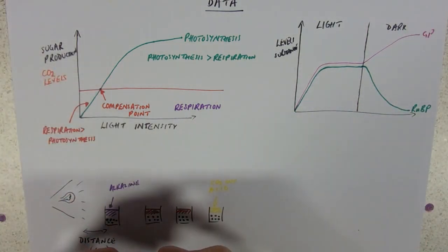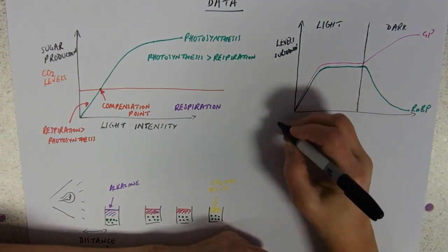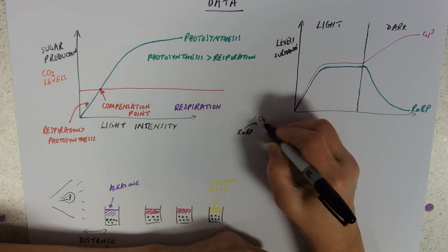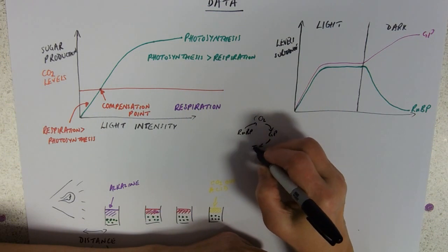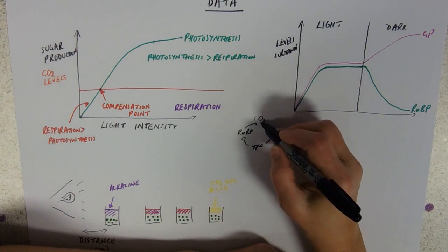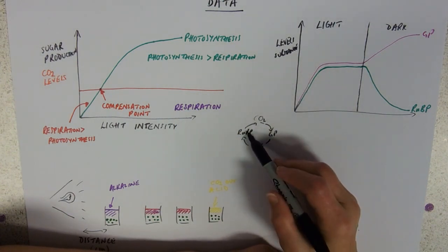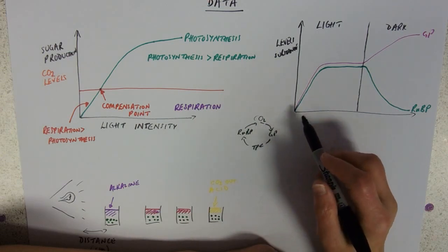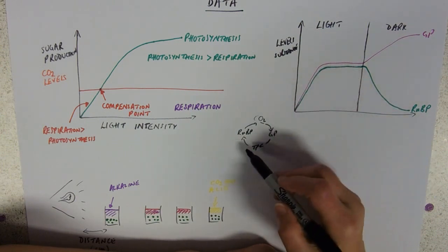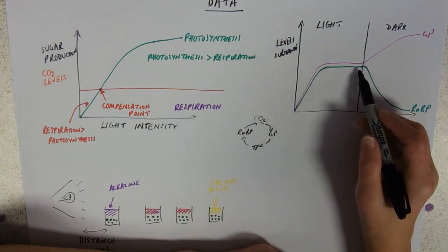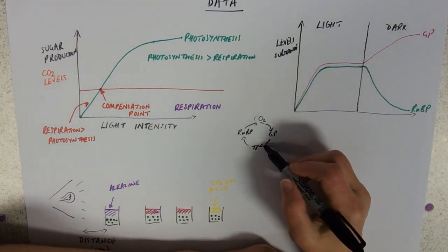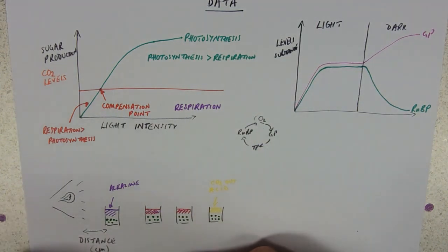So thinking about Calvin cycle, why on earth should that be? This is my little Calvin cycle. I'm going to just write it over here: CO2, RUBP, GP, TP, back to RUBP. So in the light, everything's fine, isn't it? We can fix our carbon dioxide, carbon dioxide fixation. And the cycle carries around. So we're making GP, and the level goes up. And the GP's resynthesized into RUBP, so that level goes up. Super duper. And they level out in the middle because you're making the GP at the same rate as you're resynthesizing your RUBP, so you can do it again.